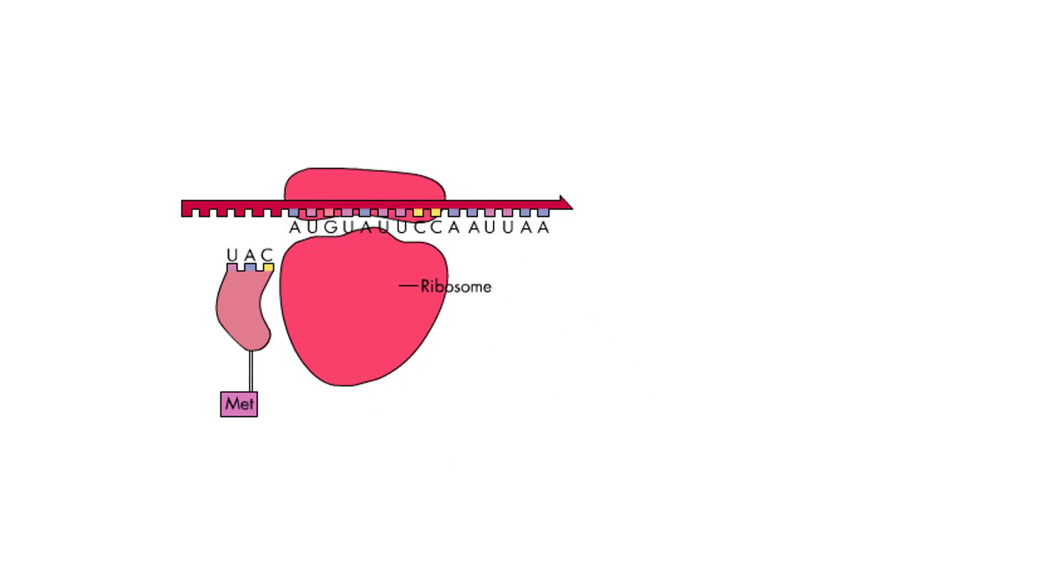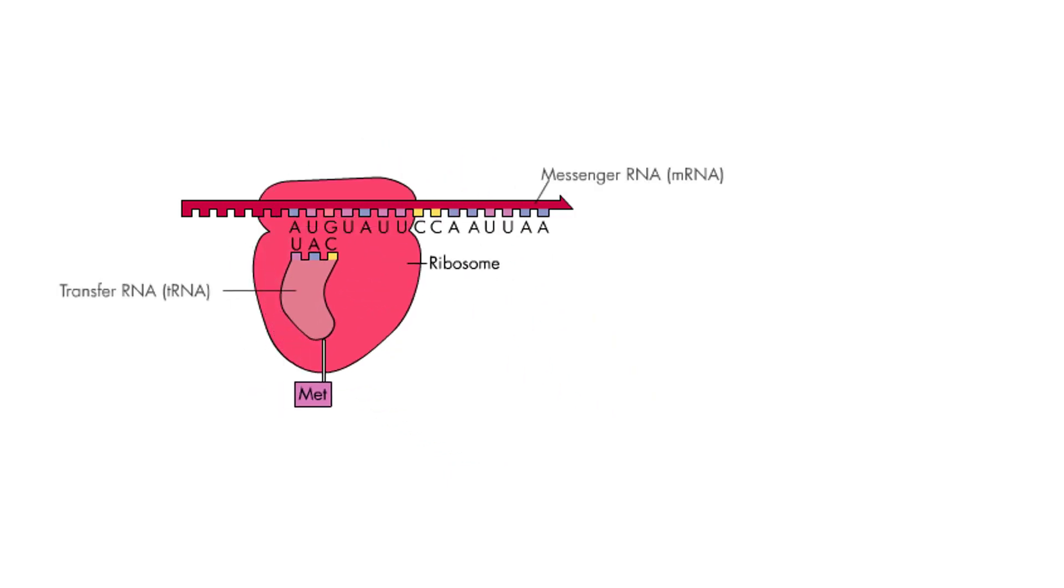During initiation, four components of the translation apparatus come together: the two ribosomal subunits, an mRNA, and a tRNA molecule containing the amino acid methionine. The tRNA binds to the first codon in the mRNA.